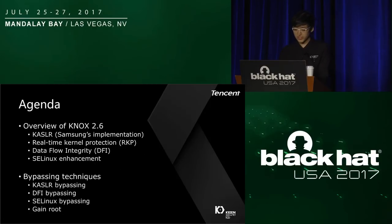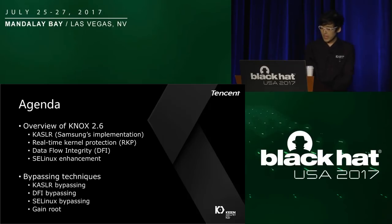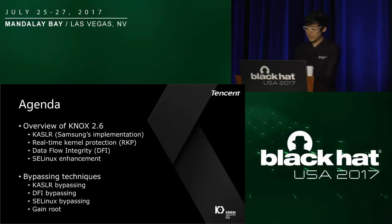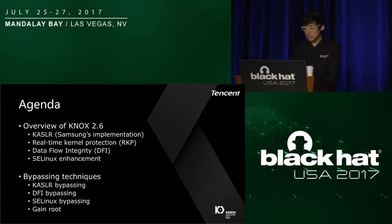Here is the agenda. Before we begin the presentation, I assume that you have basic knowledge of local privilege escalation on modern operating systems, and I also assume that you have the basics of SELinux — but if you don't, no worries, I'm going to do a quick explanation later on. The first part is an overview of Knox 2.6, including the implementation of KASLR, real-time kernel protection, data flow integrity, and SELinux enhancements. Finally, I will explain how to bypass all these mitigations step by step.